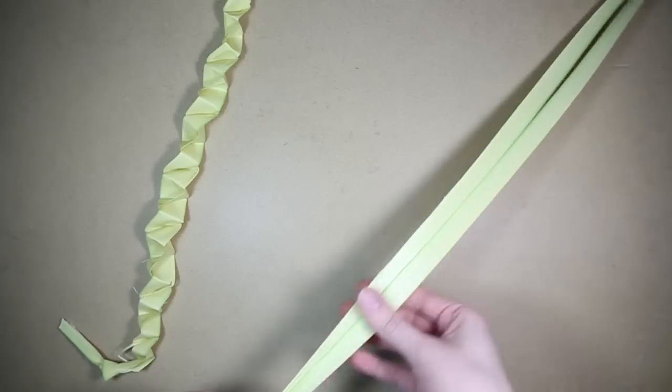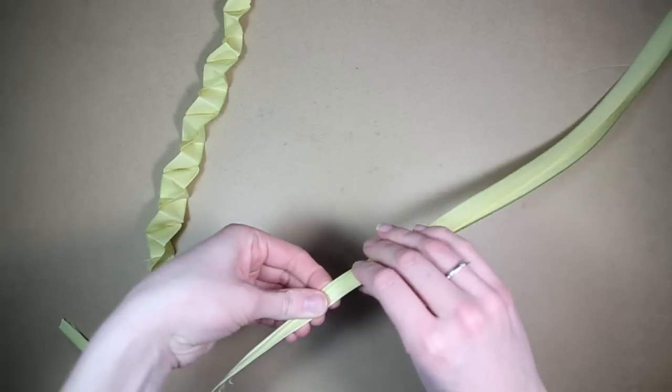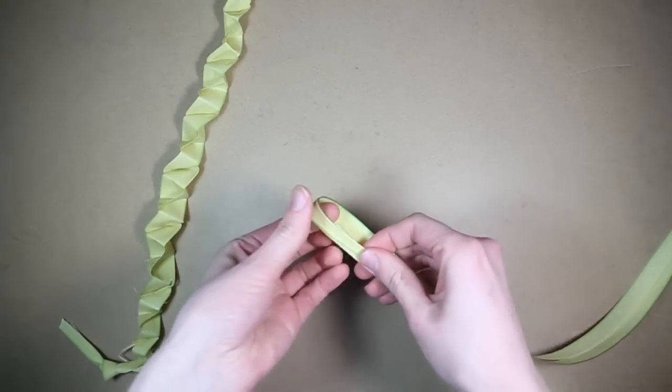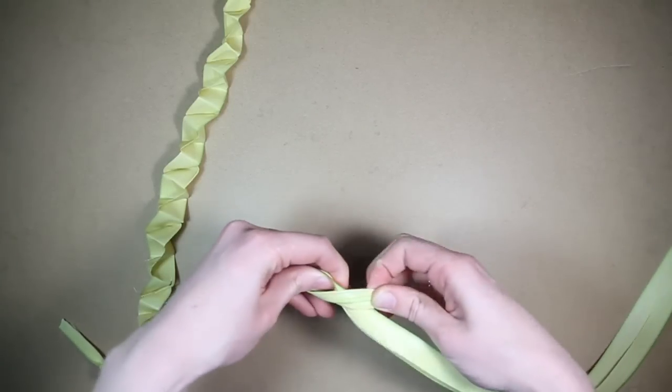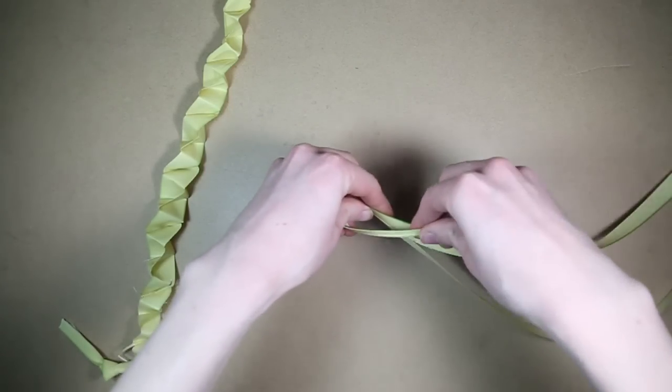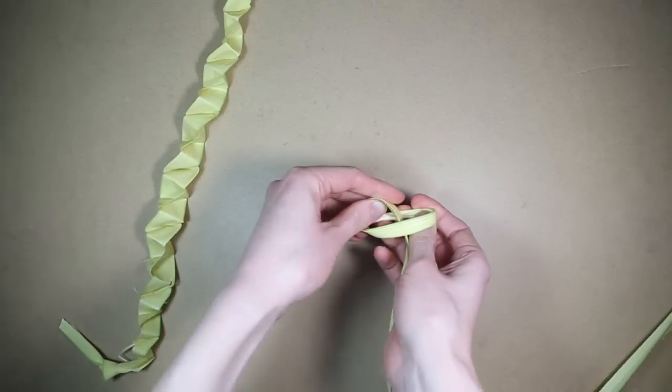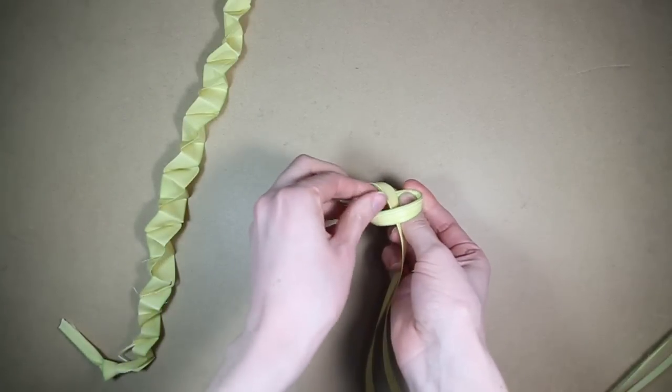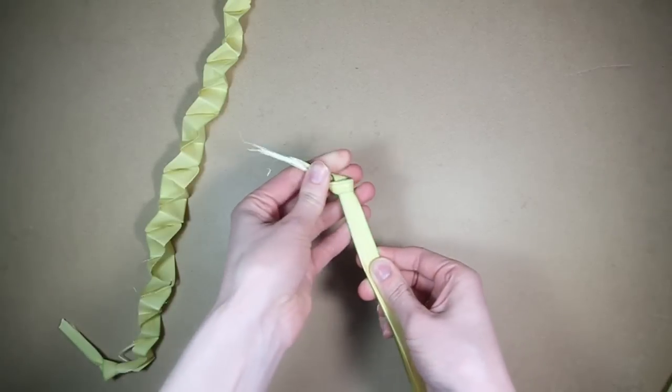Now that I have my two palm branches, I'm going to tie the end off. That's how I like to start out. So I'm going to make a loop and then tuck the short end through the loop like this and make a knot.